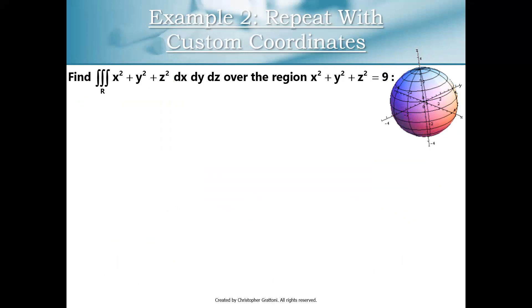Alright guys, so in this example we're going to repeat the exact same problem yet again, but this time we're going to make our own custom coordinate system. So we're still going to start out with the ideas behind cylindrical coordinates here. So remember if we have x squared plus y squared plus z squared is equal to 9, if we substitute in our cylindrical coordinates r cosine t, r sine t, and s, we end up with r squared plus s squared equals 9.